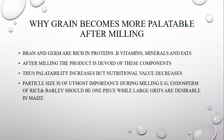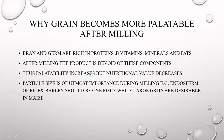Why does grain become more palatable after milling? Because layers that cause palatability problems, like bran, are removed. However, bran and germ are rich in proteins, B vitamins, minerals, and fats. After milling, the flour obtained is devoid of these components. So palatability increases, but nutritional value decreases because so much protein, B vitamins, minerals, and fats are removed along with the bran and germ.